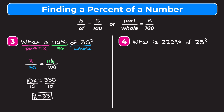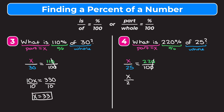Example four: what is 220% of 25? Our part is X, our percent is 220, and our whole is 25. Setting up the proportion: X over 25 equals 220 over 100. Crossing out zeros and then dividing top and bottom by 2 gives X over 25 equals 11 over 5.